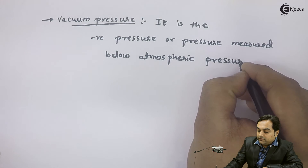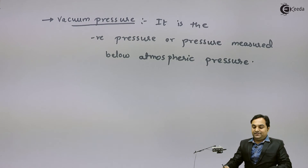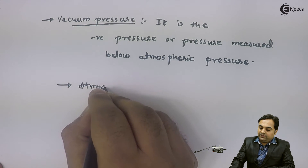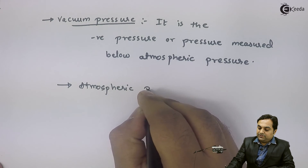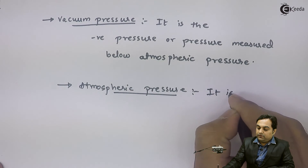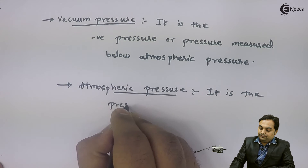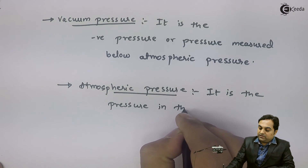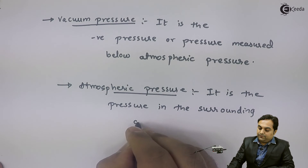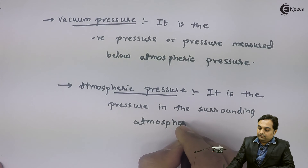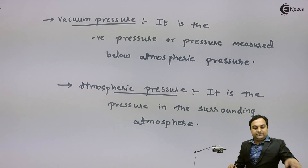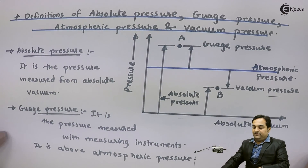Atmospheric pressure is very simple — it is the pressure in the surrounding atmosphere, or we can say the pressure exerted by the air on the surroundings.